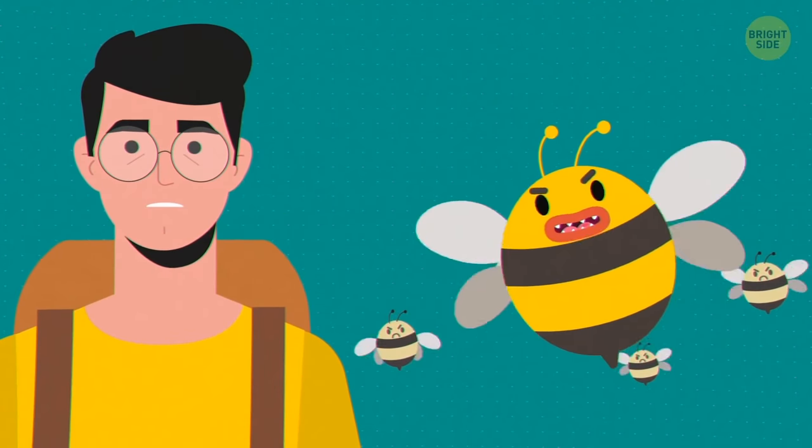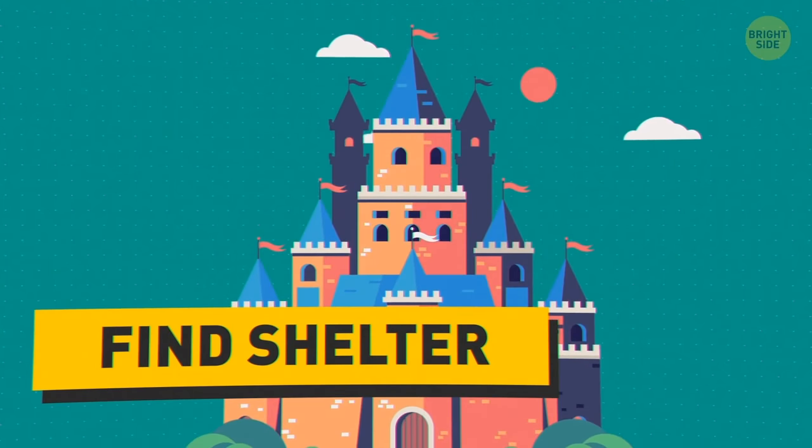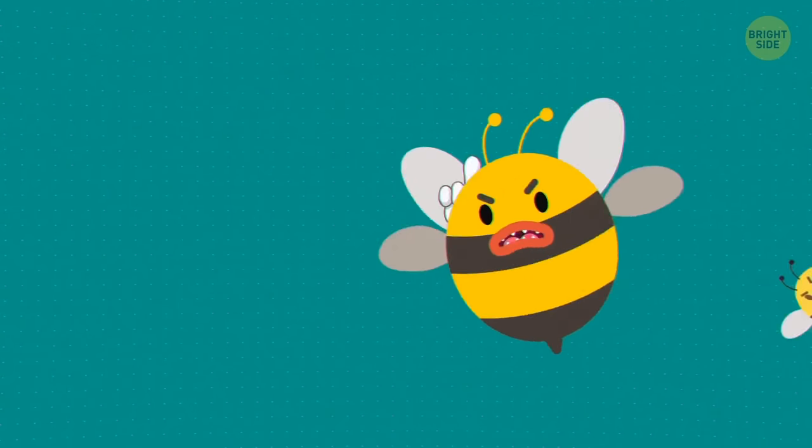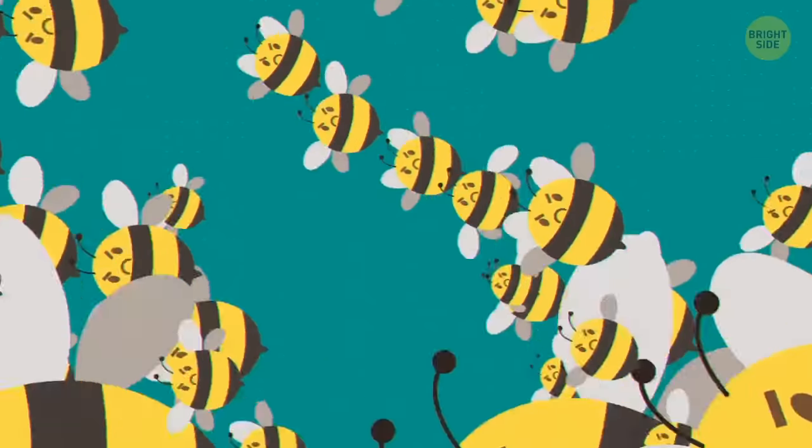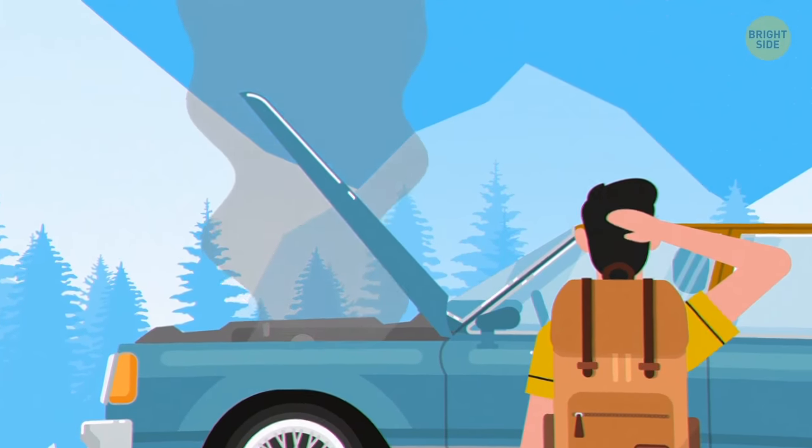A bee constantly bumping into you is a sign of a swarm planning to sting, so find shelter ASAP. And don't wear dark clothes in places with bees. They find it threatening, so they're likely to become defensive.